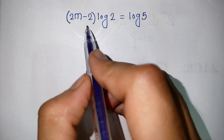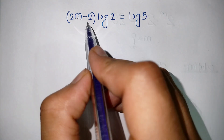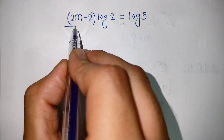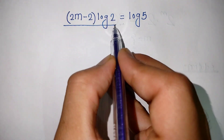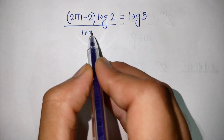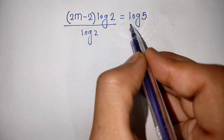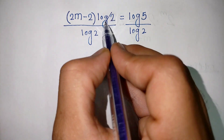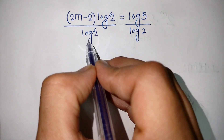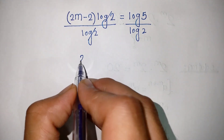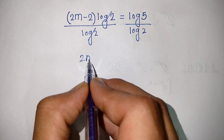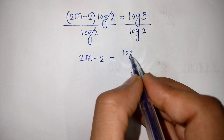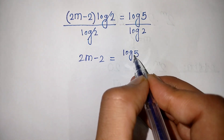So we have 2m minus 2 times log of 2 is equal to log of 5. Now divide both sides by log 2. The log 2 terms cancel, leaving 2m minus 2 is equal to log of 5 divided by log of 2.